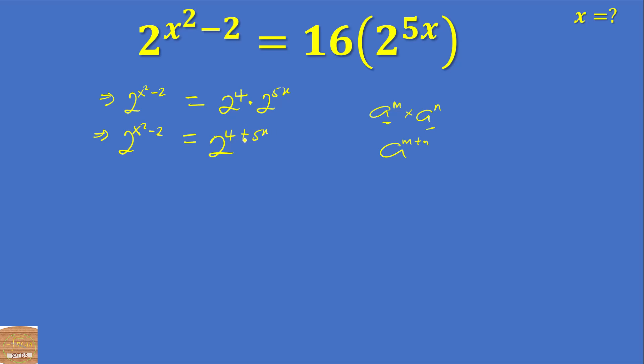All right, so let's see what we can do. The bases are equal, so I can equate the exponents. So x squared minus 2 equals 4 plus 5x.